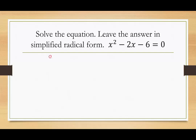So let's label. We have a is 1, b is negative 2, and c is negative 6. If you don't know the quadratic formula, you need to keep writing it down over and over again until it finally sticks.